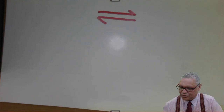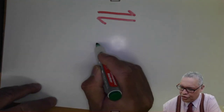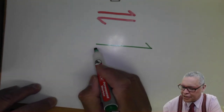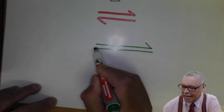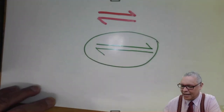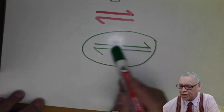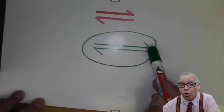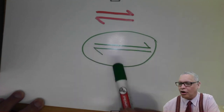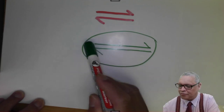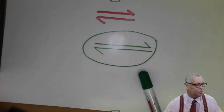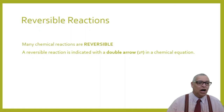If I draw the forward reaction going in one direction with an arrow, and the reverse reaction going in the opposite direction, that is how we represent a reversible reaction. Take note: the arrow on top is the forward reaction and the one at the bottom is the reverse reaction. We do not say 'backward' — we say reverse reaction.